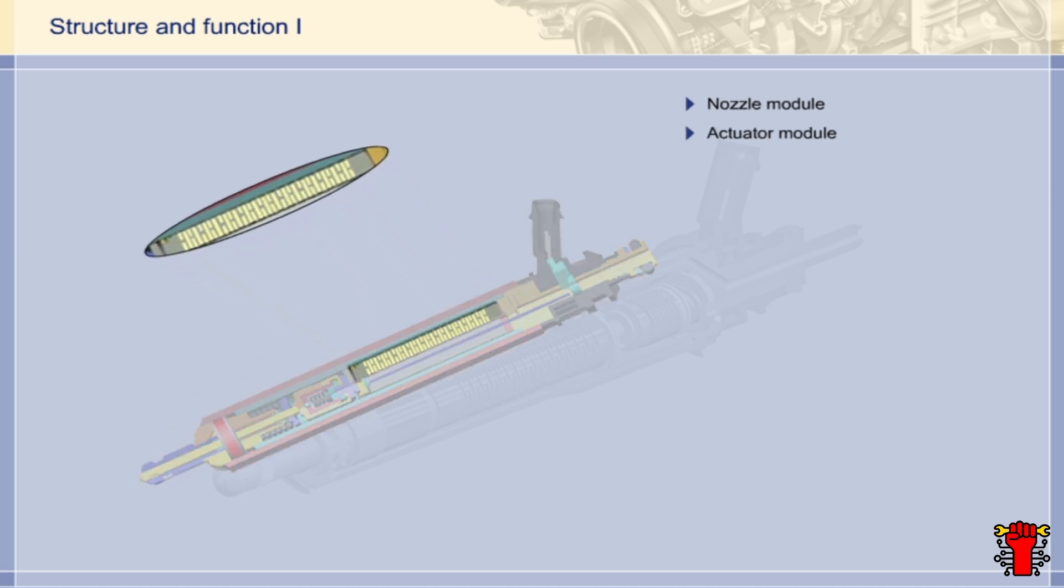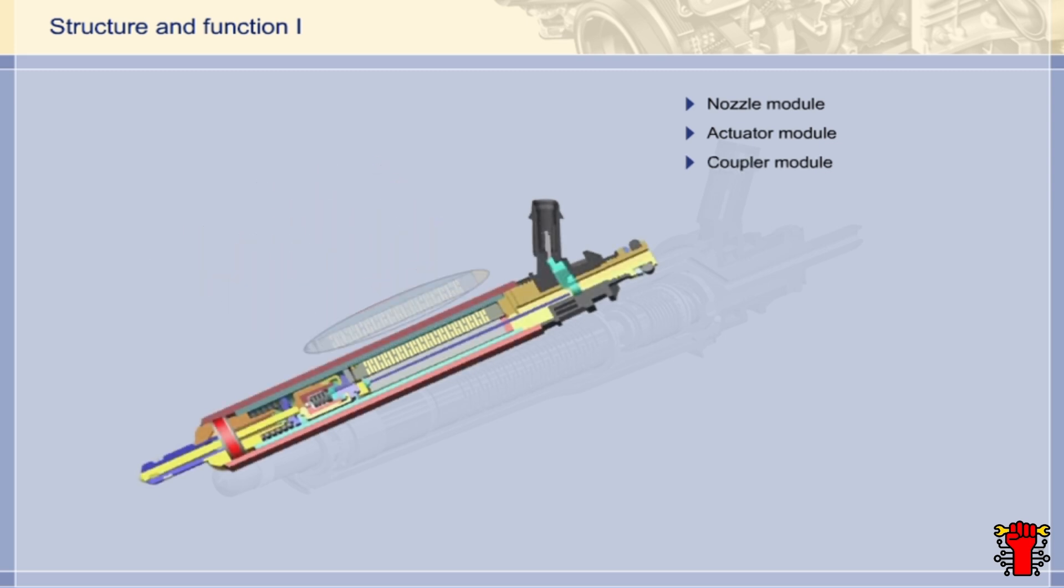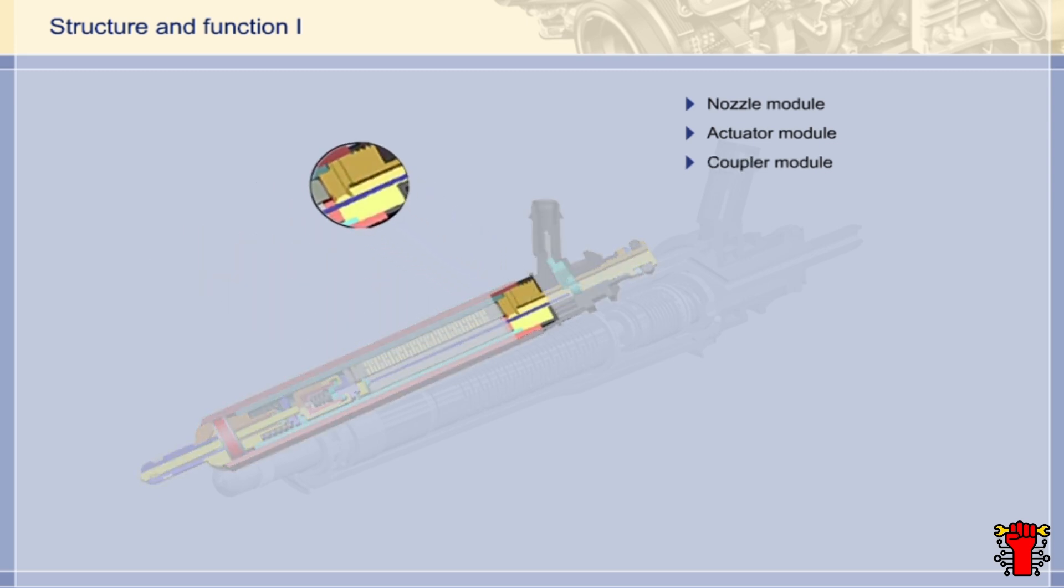Lengthwise, the actuator module is structured as a series of layers. This way, the expansion lengths of the individual piezo layers are added together for a cumulative effect. A coupler module is used to hold both the actuator module and the nozzle module free of play in the direction of expansion. This ensures that the entire longitudinal expansion of the piezo layers can act on the nozzle needle free of play.